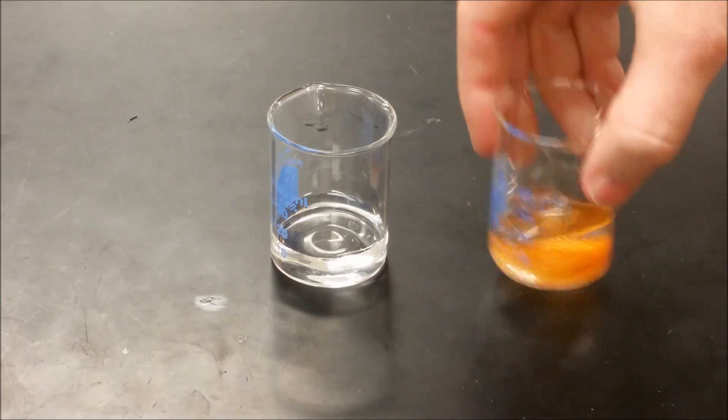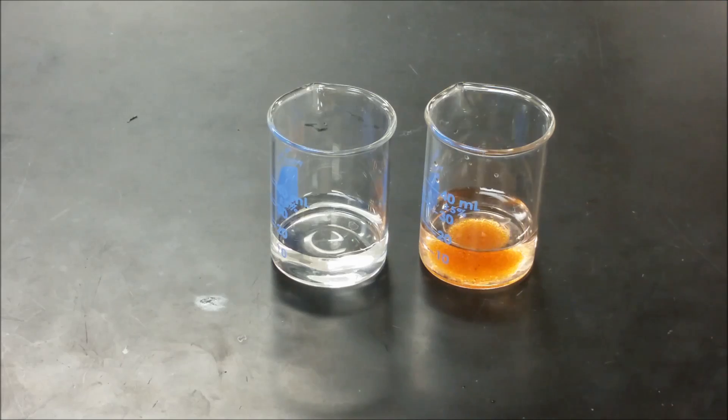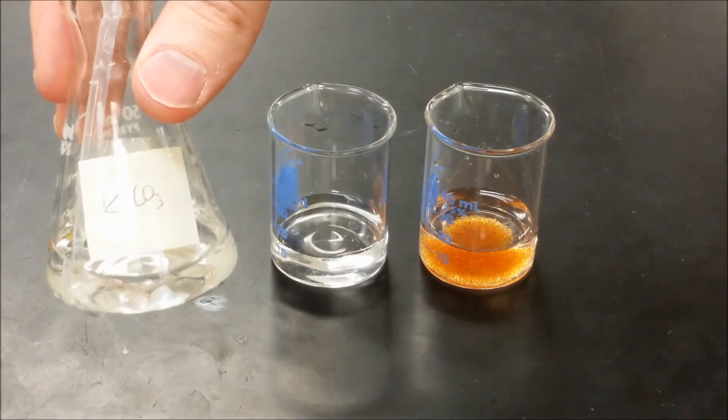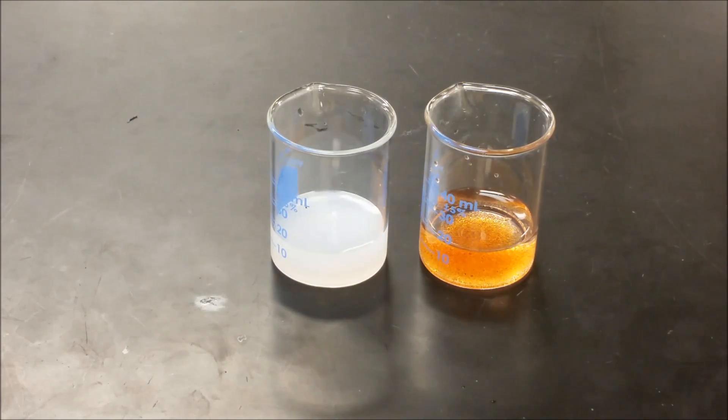So we're essentially removing the calcium from there and replacing it with sodium. What that does is if you add carbonate to it, the carbonate will form a precipitate in the one with calcium, but in the other one you'll either see far less or no precipitate.